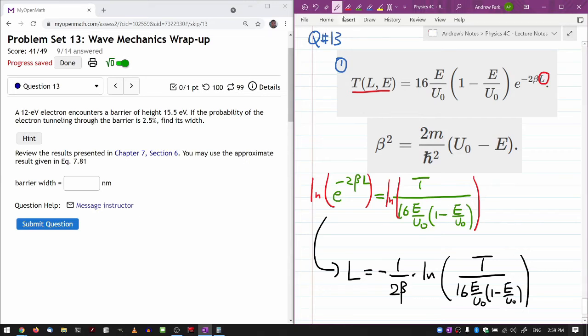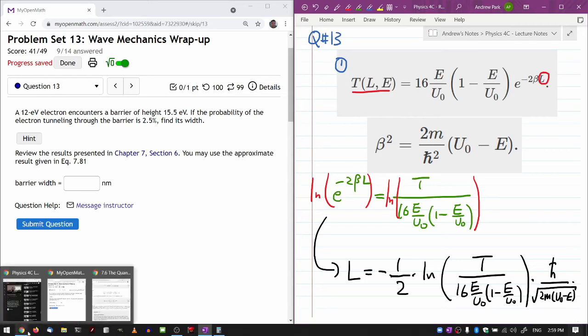And beta is, let me put in the expression for beta. Then it's 1 over 2 times natural log of 1 over beta, which would be H divided by square root of 2M(U-naught minus E). I think I have something I can just plug in numbers to. So let's do that.